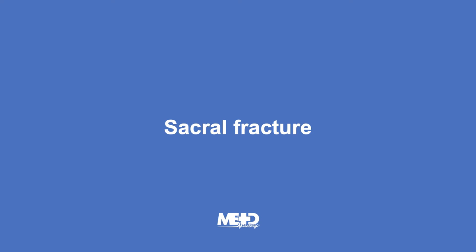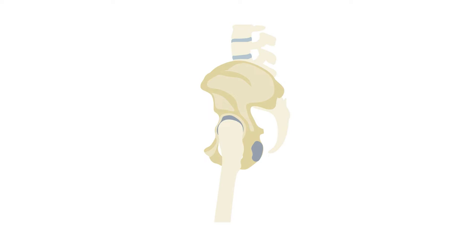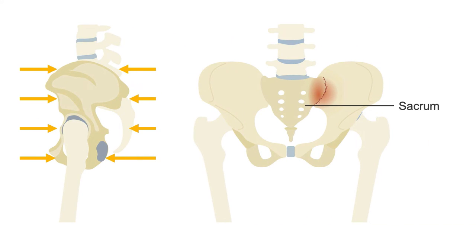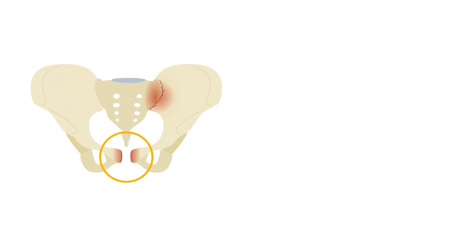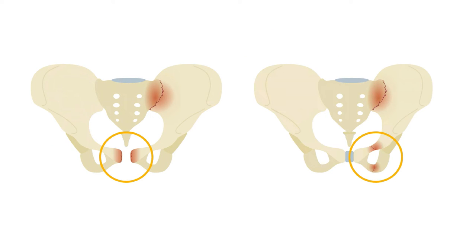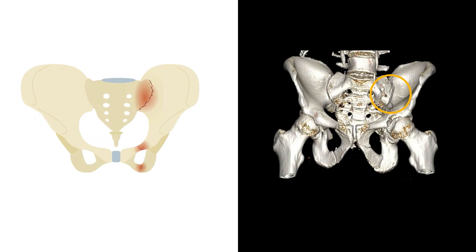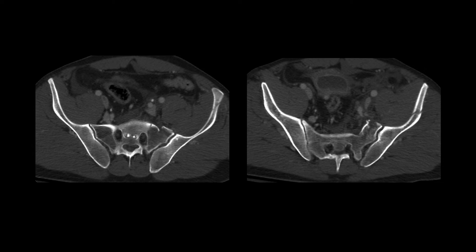Sacral fractures are often associated with injuries to the other pelvic bones. In severe trauma with compressive forces, there can be fractures involving the sacrum and sacroiliac joint, often with either widening of the pubic symphysis or fracture of the pubic ring. Sacral fractures typically follow a vertical orientation along the bone. On CT, sacral fractures will look like irregular lines and cortical defects — abnormal dark lines through the dense outer bone indicating fracture.